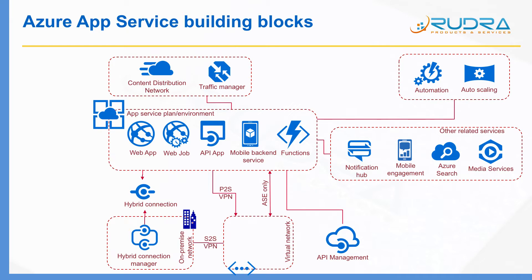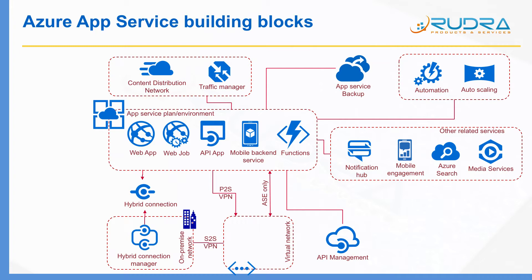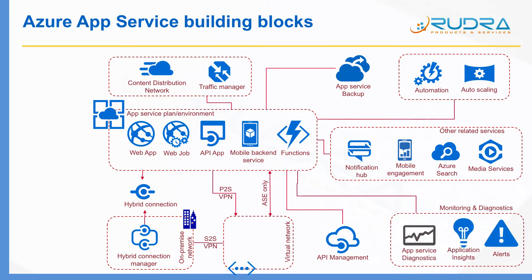One important thing to keep in mind is that you should always back up the content of your applications. For that purpose, you can use App Service Backup. In terms of monitoring, there are a lot of features available. First is App Service Diagnostics, using which you can view diagnostic information and act on any issues. A more sophisticated monitoring service is Application Insights, which you can use to monitor different metrics associated with your web apps, mobile apps, and take corrective actions. You can also set up alerts to get notified when something goes wrong.